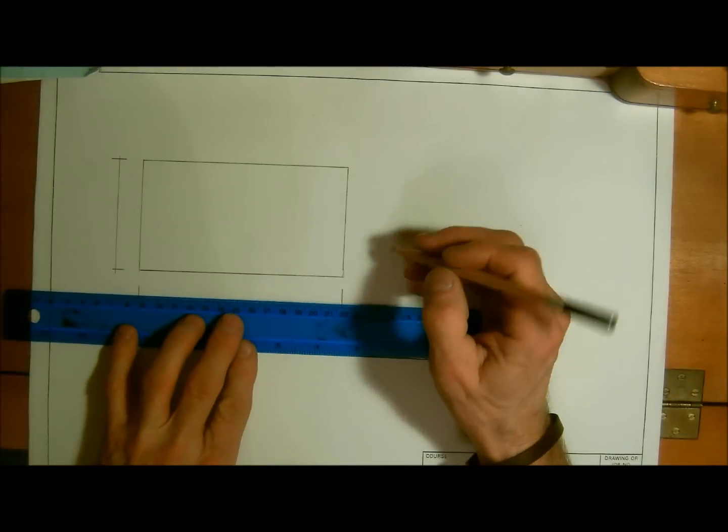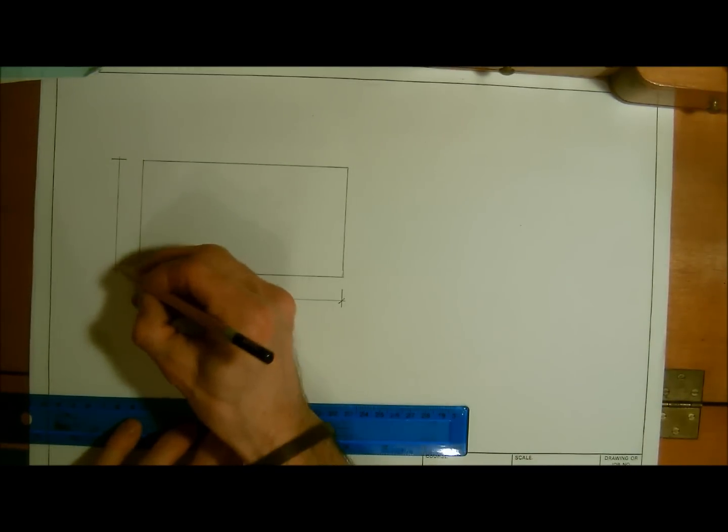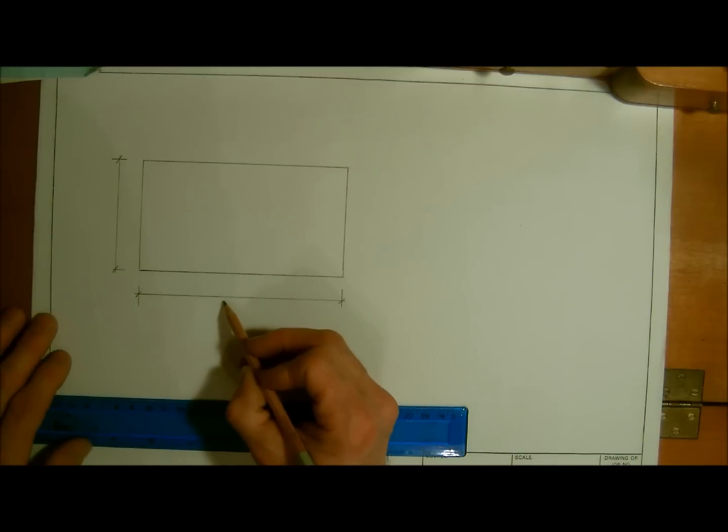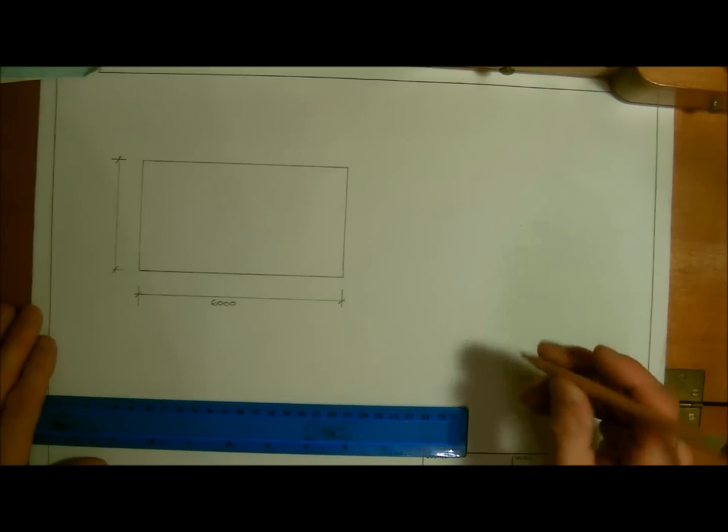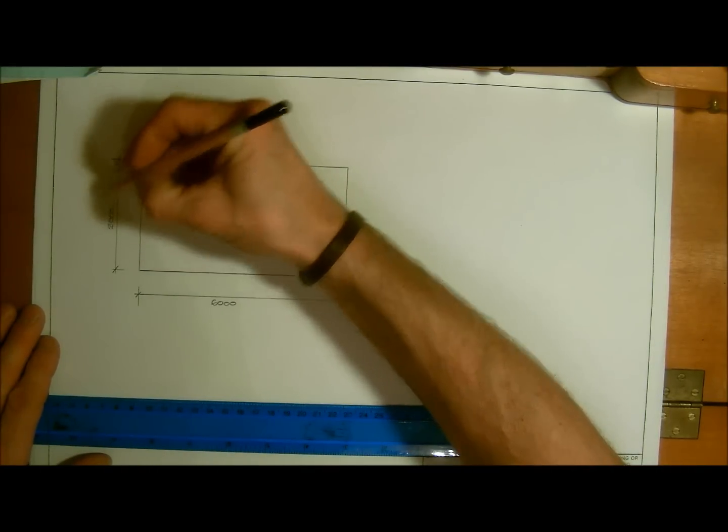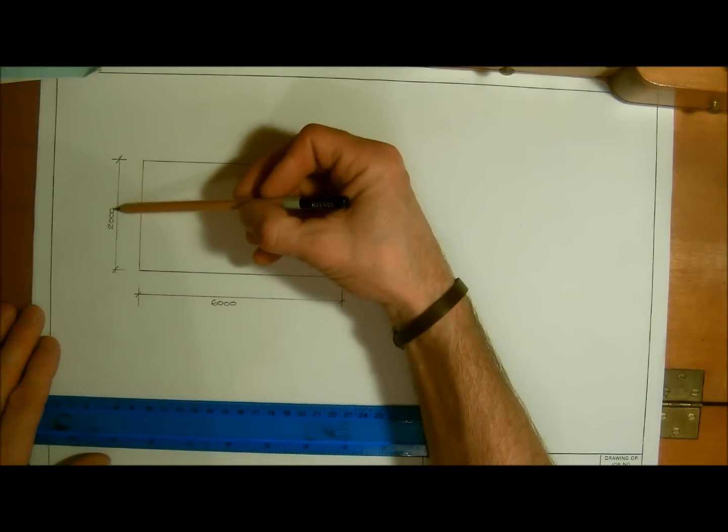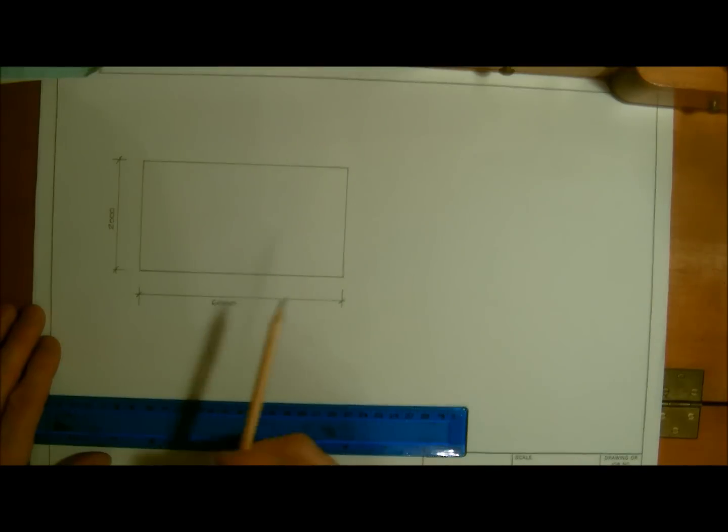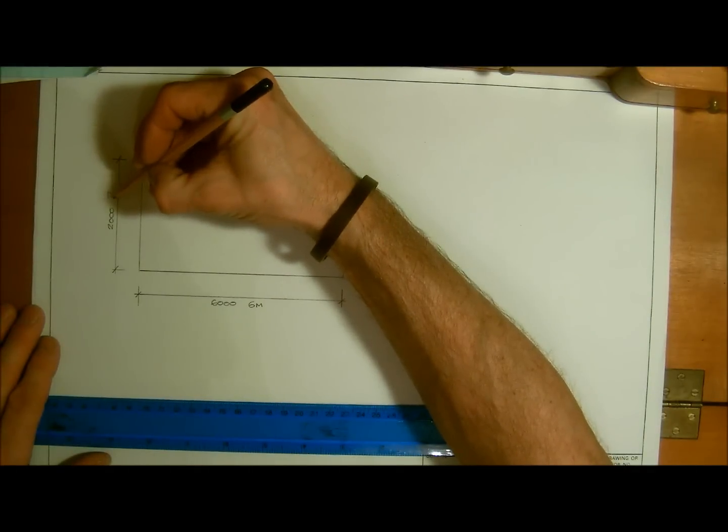We're going to keep the numbers nice and simple just to make this easy to follow to start off with. So if we say for example that the wall that we have here is six meters, and I've written this in millimeters to be not awkward but just to show you that this is what often is shown on drawings, which is 6000 millimeters by 2000 millimeters high. That again we know is six meters and the 2000 millimeters is two meters.